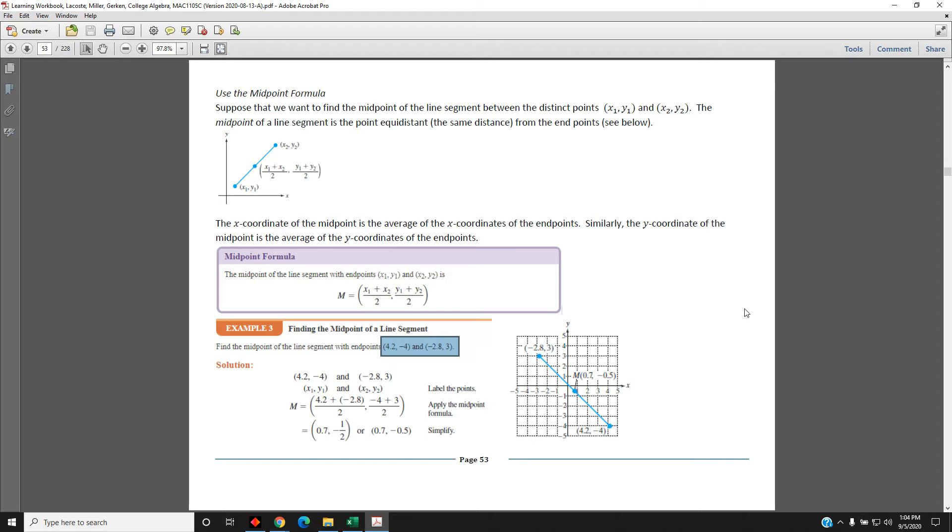The first thing we want to do is identify which one of these points will be point 1 and which one will be point 2. It does not matter which one is which. As long as we are consistent, we will get the same answer at the end. So, the author of your textbook has decided that the 4.2 comma negative 4 will be the first point x1, y1 and the negative 2.8 comma 3 will be the second point x2, y2.